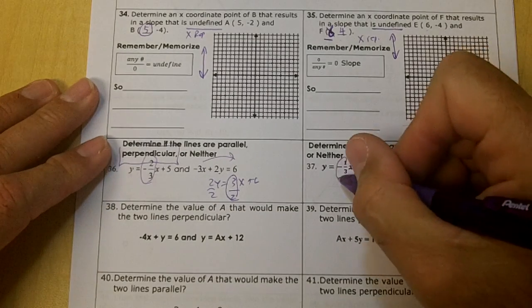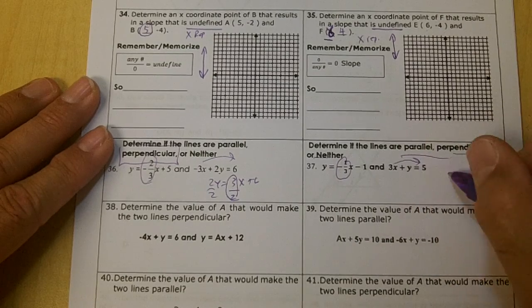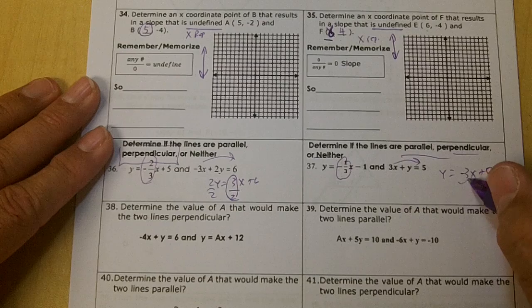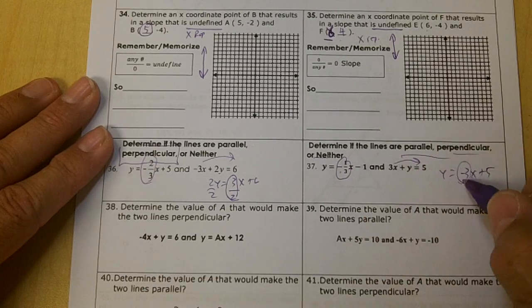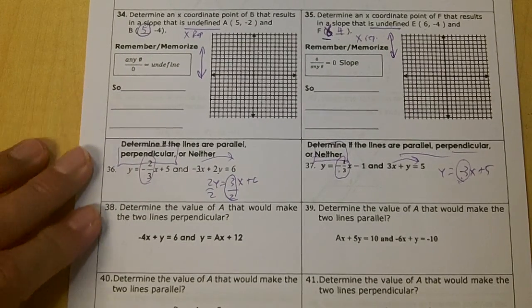Right here, this is my slope, negative one-third. Determine if they're parallel, perpendicular, or neither. Move the x over. Y equals negative 3x plus 5. This is my slope right here, negative 3. They're not opposite reciprocals, are they? They're the same. They're both negative. So that one's neither.